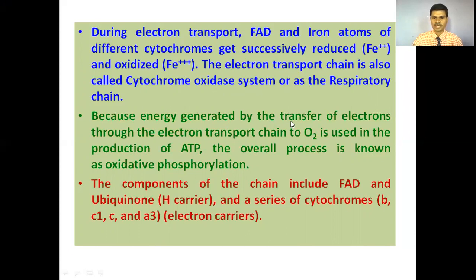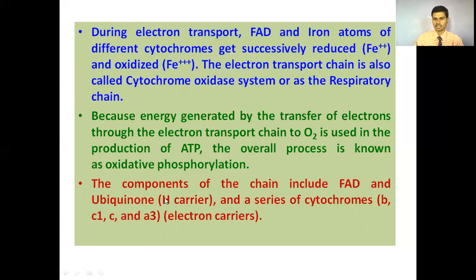The energy generated by the transfer of electrons to oxygen is used in the production of ATP. The overall process is known as oxidative phosphorylation — the final electron acceptor in ETS is oxygen and there is formation of ATP. The components of the chain include FAD and ubiquinone, which act as hydrogen or proton carriers, and a series of cytochromes — cytochrome b, cytochrome c1, cytochrome c, and cytochrome a — which act as electron carriers.